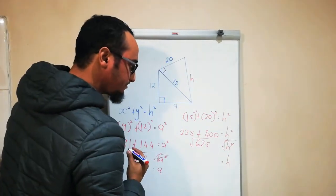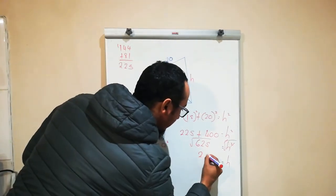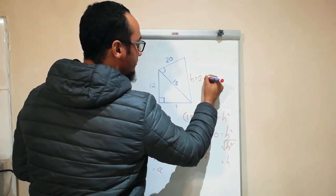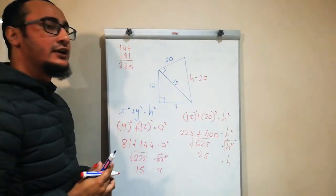And the square root of 625 would be equal to 25. Therefore, the value of h over here is equal to 25.